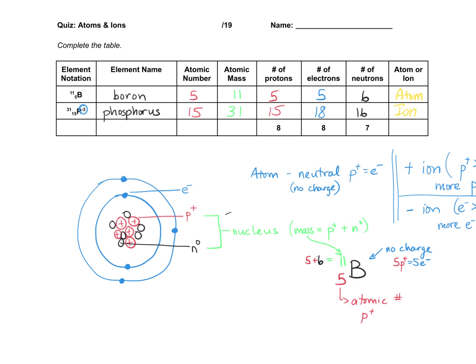So 8 protons, atomic number 8. Go ahead and look that up on the periodic table. You'll find it's oxygen. So I can already fill in the symbol and the atomic number. Now mass. Again, mass is going to come from the nucleus.